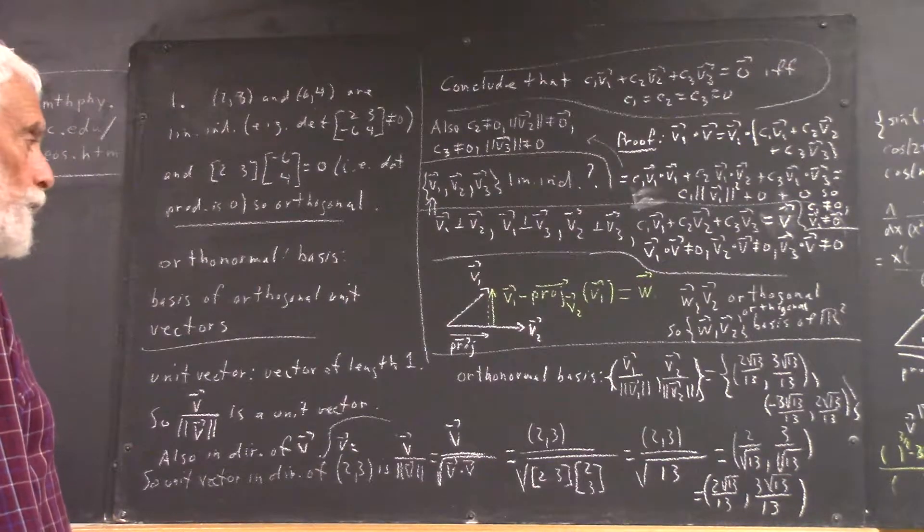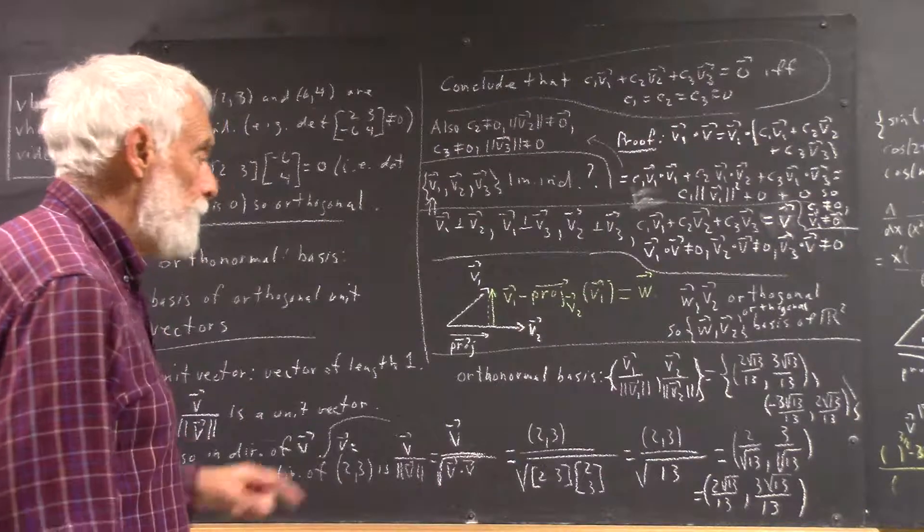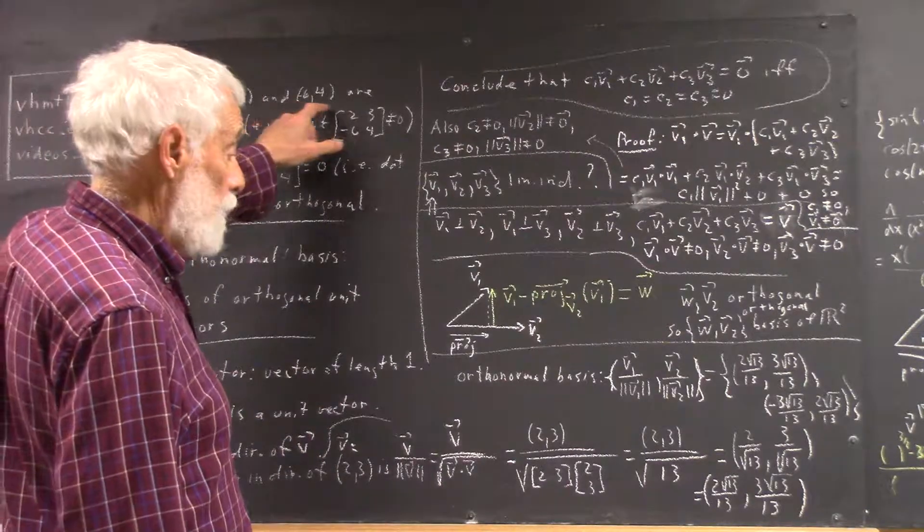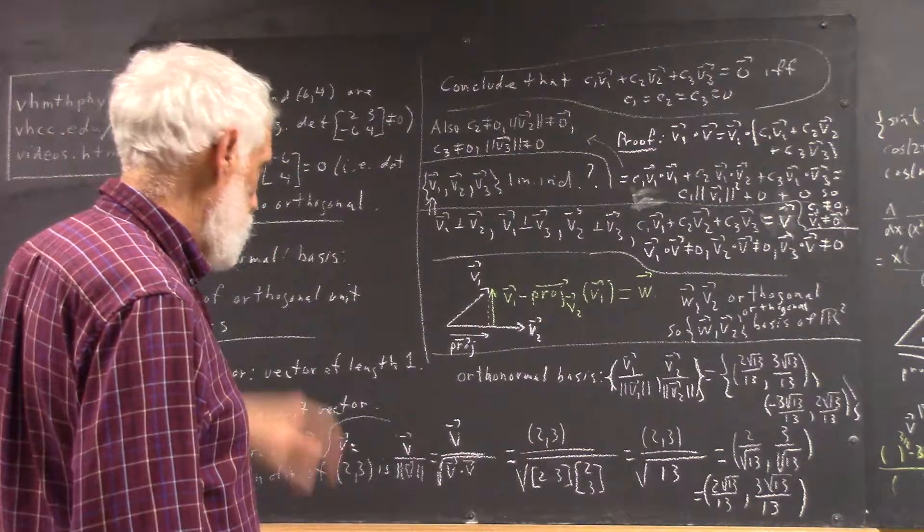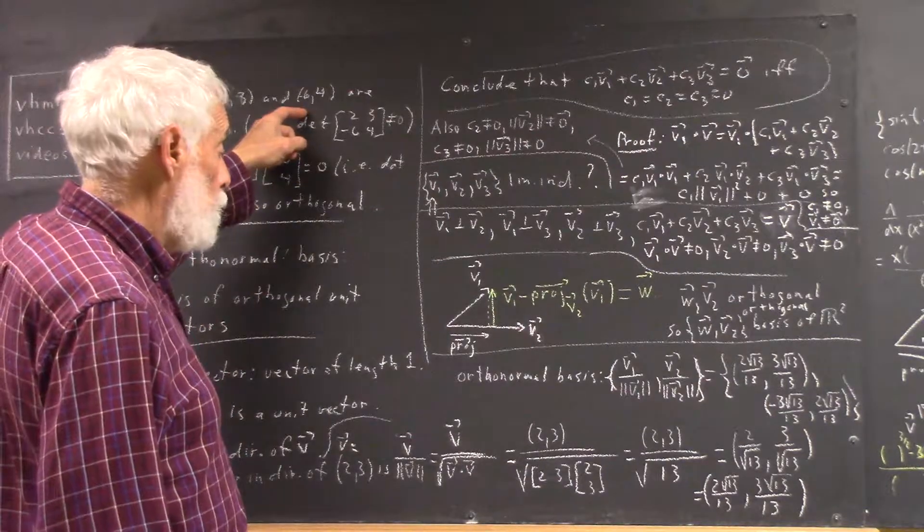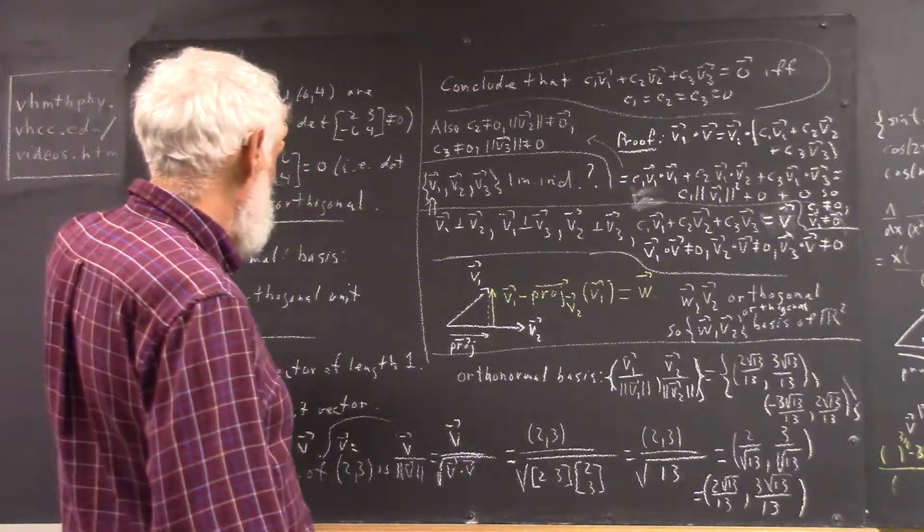So, you get an orthonormal, well, okay. And then we can do the same for the vector (-6, 4). Okay, so, for (-6, 4), the vector that we would get, and I don't have room to write it out, but that vector would be